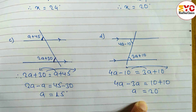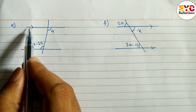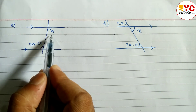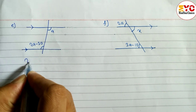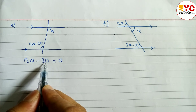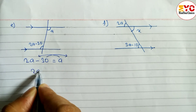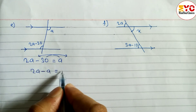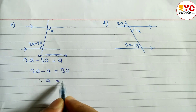Now look at question (e). We have to find the value of a. Two lines are parallel, and the two angles are alternate — one on the left, one on the right of the intersecting line. Alternate angles are always equal, so: 2a − 30 = a. Taking 'a' to the left and 30 to the right: 2a − a = 30, therefore a = 30 degrees.